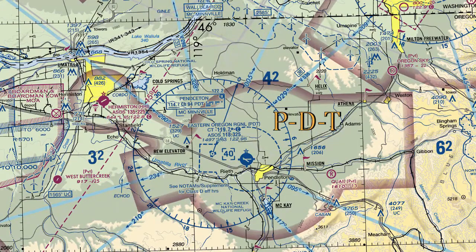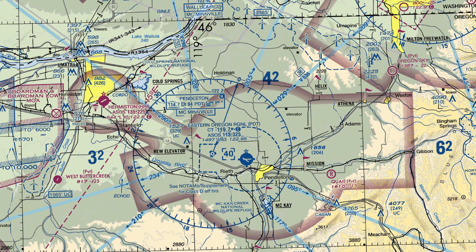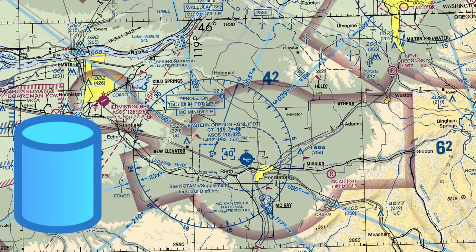You can spot a delta airspace by the dashed blue line that outlines the airspace. There are also some brackets with a number inside that tell you how high the airspace goes in thousands of feet MSL. Class Delta is typically a cylinder shape — it starts at the surface and goes up to 2,500 feet AGL.